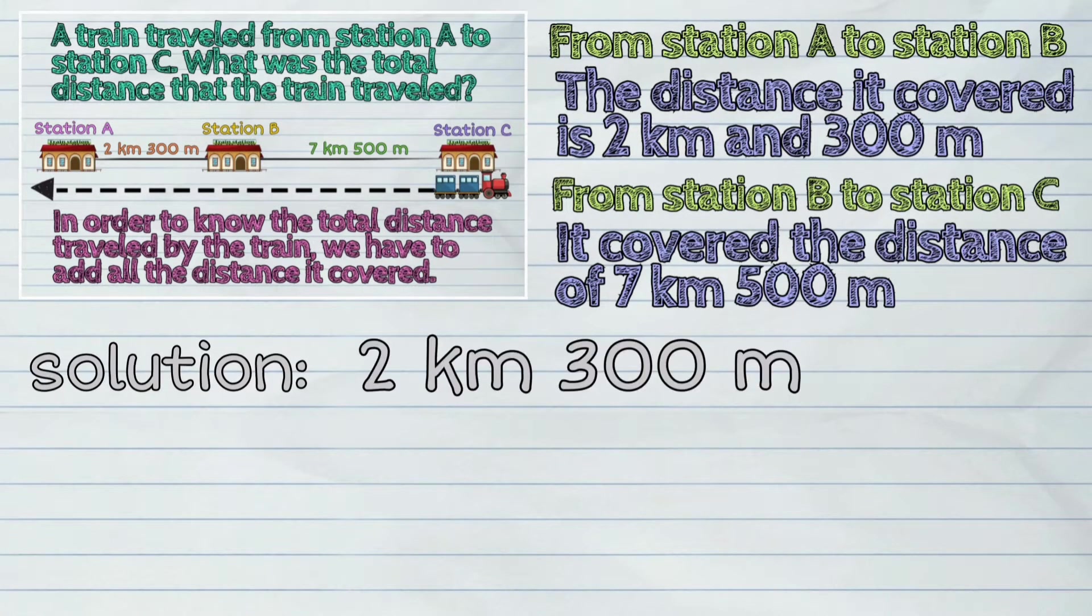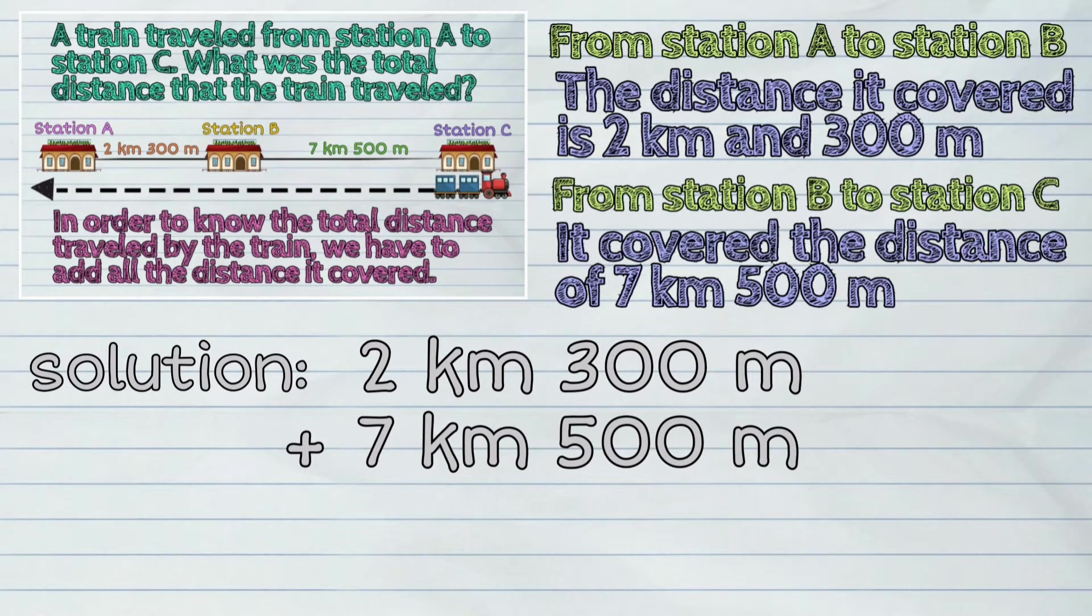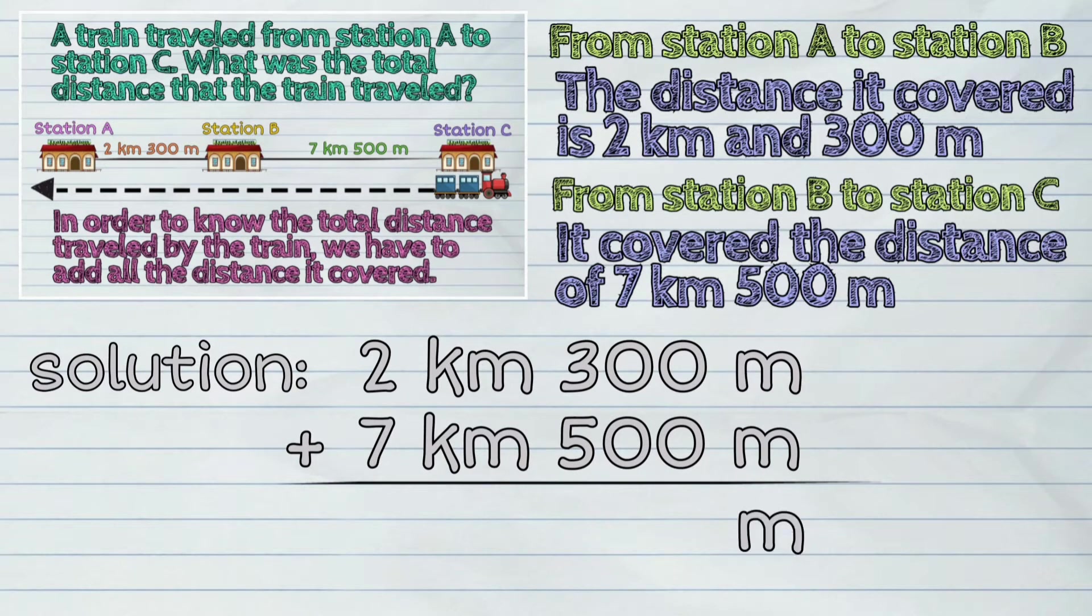2 kilometers, 300 meters plus 7 kilometers, 500 meters. Let's start with meters. 0 plus 0 is 0. 0 plus 0 again is 0. Then 3 plus 5 is 8. Next, the kilometers. 2 plus 7 is 9.